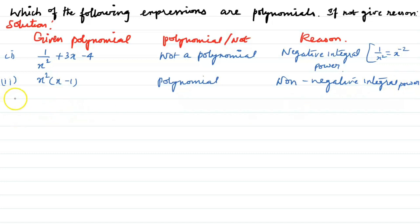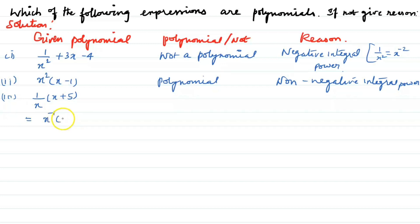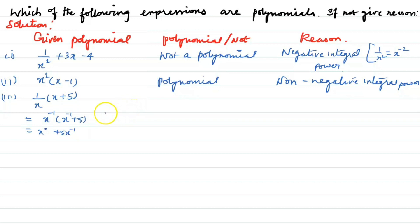Third question: 1/(x(x + 5)). This expands to x to the power of negative 1 times (x + 5), which gives x to the power 0 plus 5 times x to the power of negative 1. This is not a polynomial.